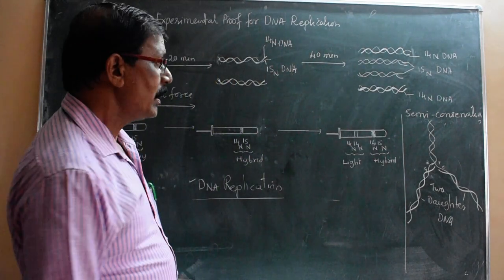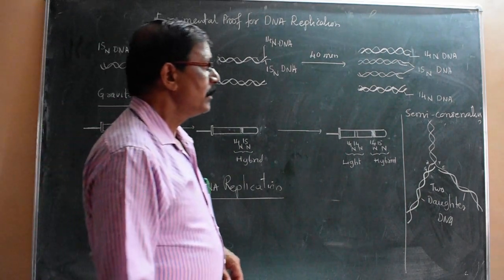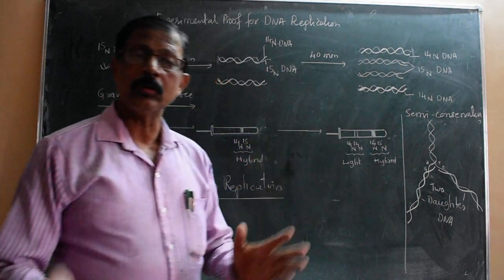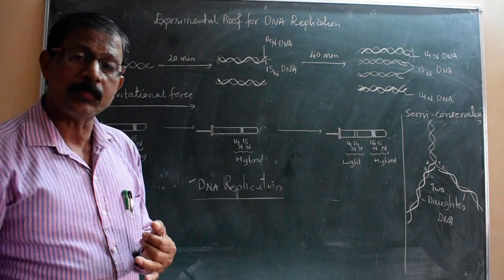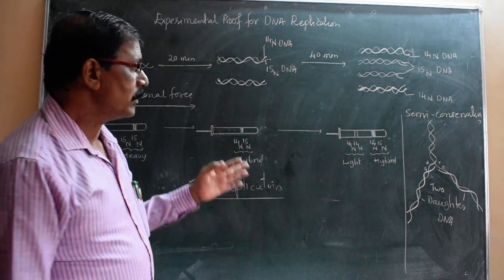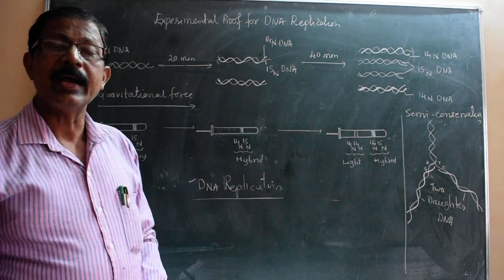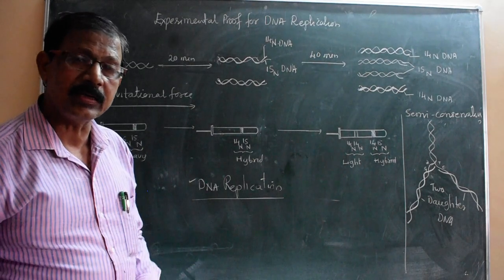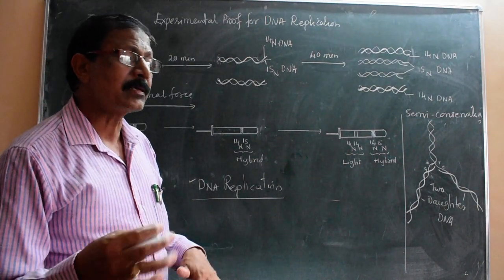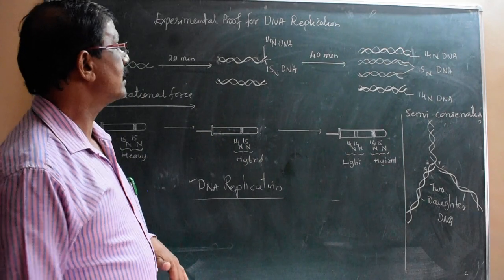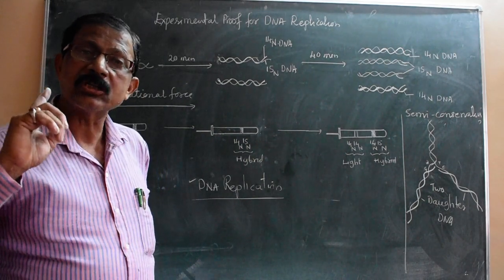This semi-conservative DNA replication was first proposed by Watson and Crick soon after the discovery of the duplex model of DNA. Later, it was experimentally proved by other scientists - and the name of those scientists is Meselson and Stahl.